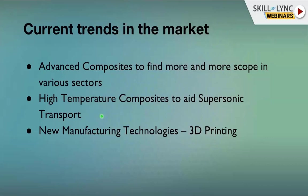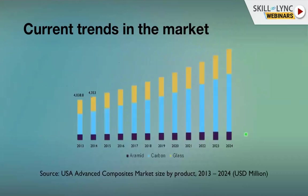Advanced composites are finding more scope in various sectors. High-temperature composites will aid supersonic transport — companies like Boom Supersonic are bringing back supersonic flights. At supersonic speeds, aircraft skins heat due to air friction, and this is where CMCs will play a big role. A Bangalore to San Francisco flight of 18 hours could be reduced to 4 hours. New manufacturing technologies like 3D printing are also being used to manufacture composite parts.